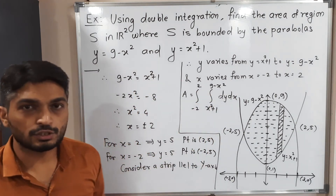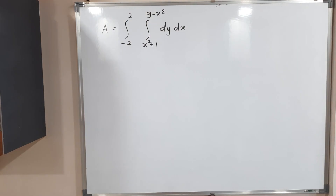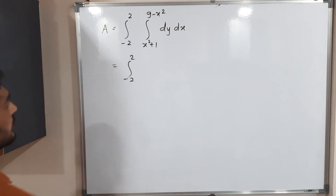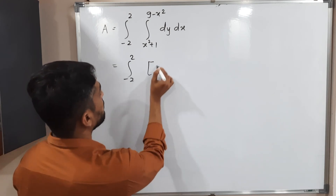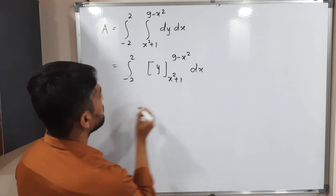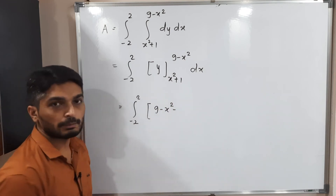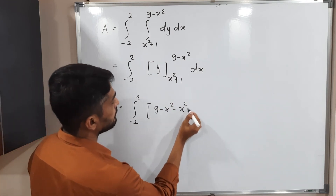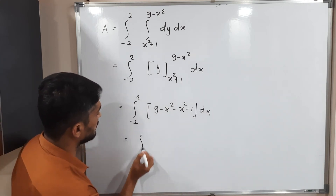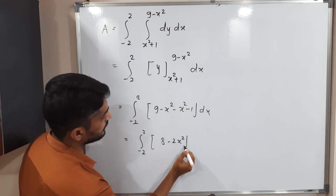Since the strip is parallel to the y-axis, we write dA = dy dx. The area integral becomes the integral from −2 to 2 of the integral from x² + 1 to 9 − x² of dy dx. Integrating with respect to y first, integration of dy is y evaluated from x² + 1 to 9 − x², giving (9 − x²) minus (x² + 1).